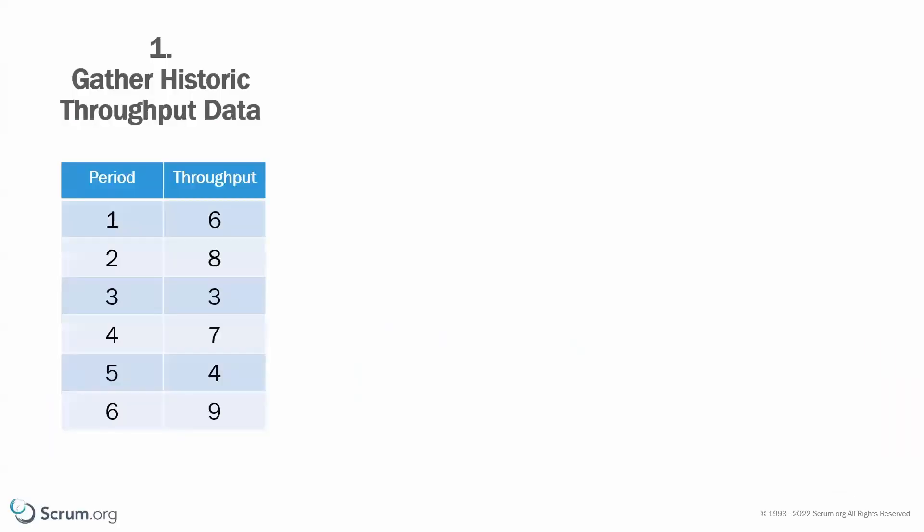The first step when we do a Monte Carlo simulation is that we gather throughput data — historic throughput data. Throughput is the number of items that we have delivered in a specific unit of time, which we refer to as a period. That could be weeks, days, sprints, whatever works best for you, but it has to be consistent within the whole simulation.